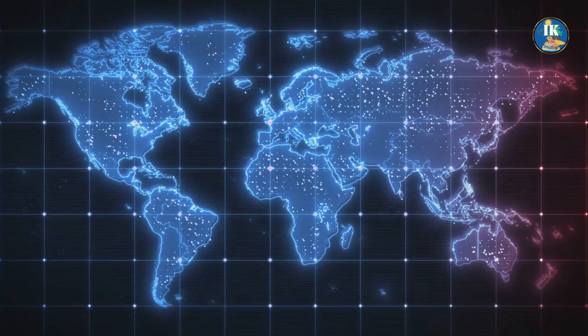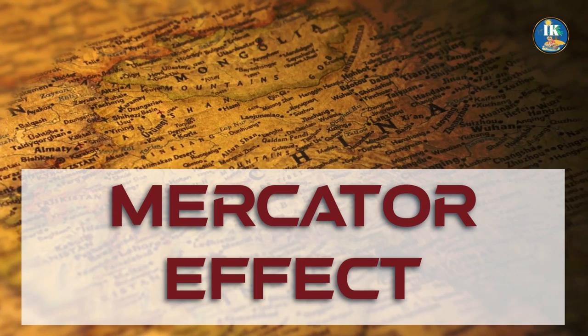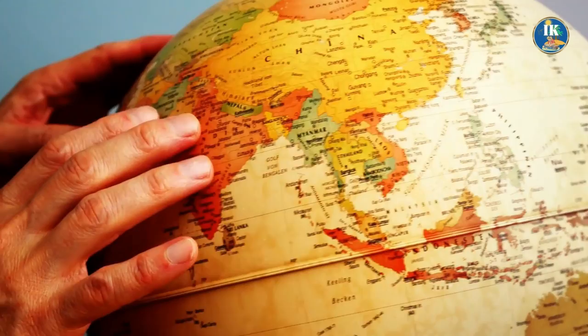Have you ever looked at a map of the world and wondered why Greenland looks bigger than South America, even though in reality it's only about one-eighth the size? That's because of the Mercator effect, a distortion caused by the way the world is projected onto a flat surface. It's a fascinating phenomenon with far-reaching consequences that are still felt today.